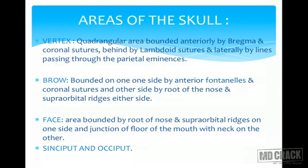Important areas on which MCQs can be asked include vertex, brow, and face. Vertex is a quadrangular area bounded anteriorly by bregma and coronal sutures, behind by the lambdoid sutures, and laterally by two imaginary lines passing through parietal eminences. Brow is bounded by the anterior fontanelle and coronal sutures on one side, and root of nose and supraorbital ridges on the other. Face is bounded by the root of nose and supraorbital ridges on one side and junction of the floor of mouth with neck on the other.